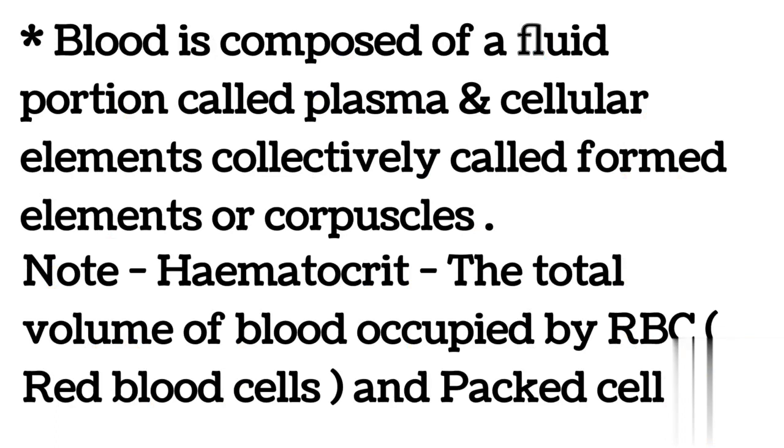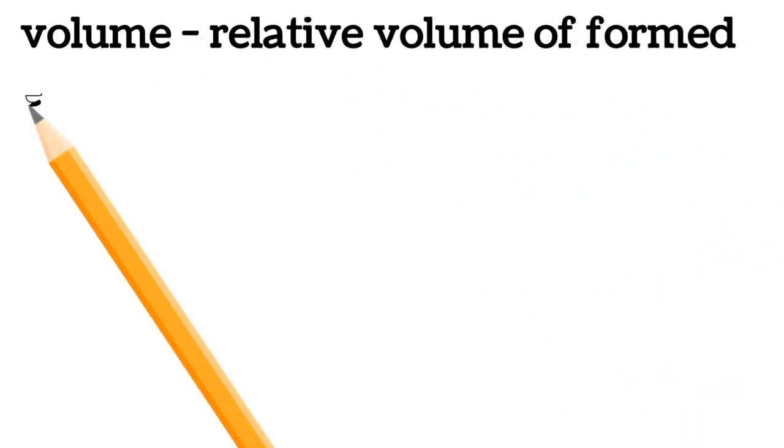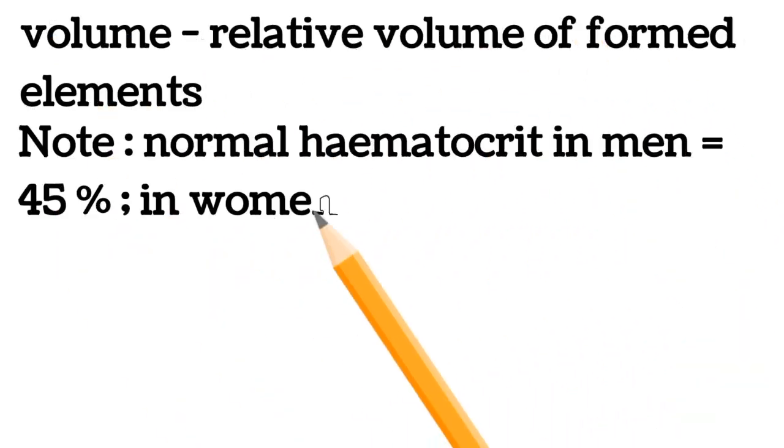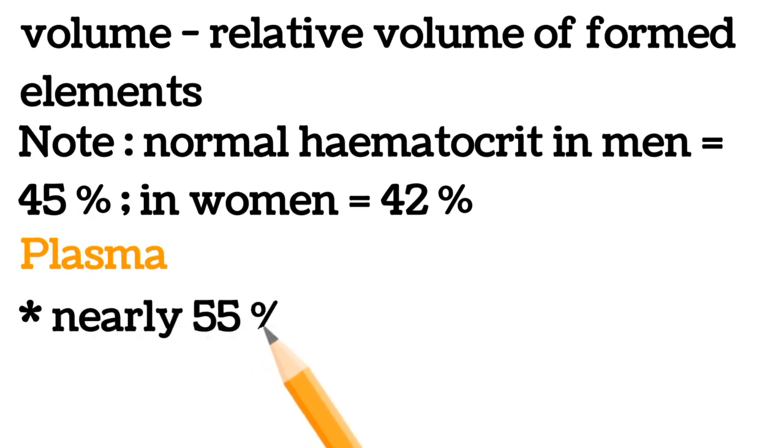Note: hematocrit is the total volume of blood occupied by RBC (red blood cells) and packed cell volume, the relative volume of formed elements. Normal hematocrit in men equals 45%, in women equals 42%. Plasma, nearly 55% of blood, is a pale yellowish fluid.